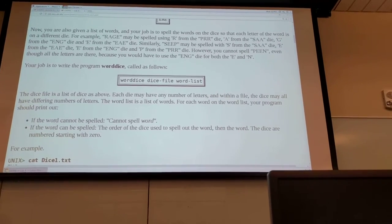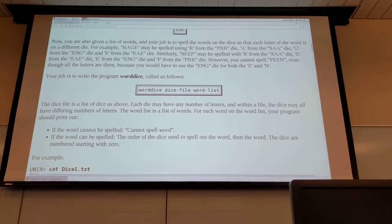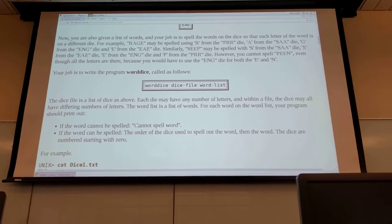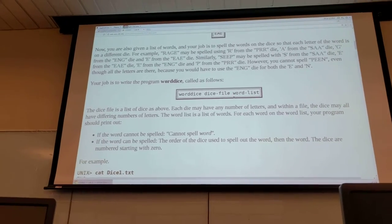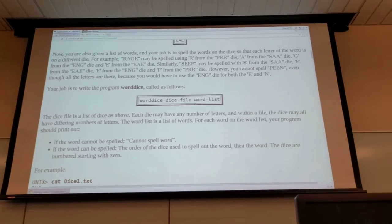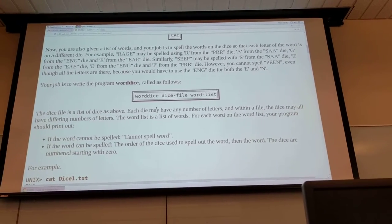In the die list each die can have a different number of letters within the same die description and the word list will contain a bunch of words and they can be different lengths so you don't have to use all of the die in order to spell one of the words in the dictionary.